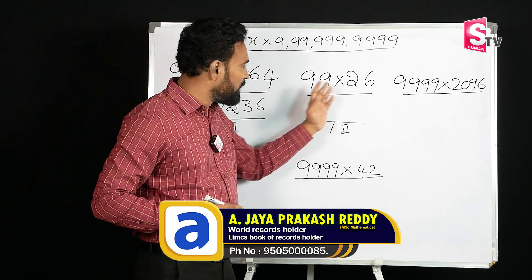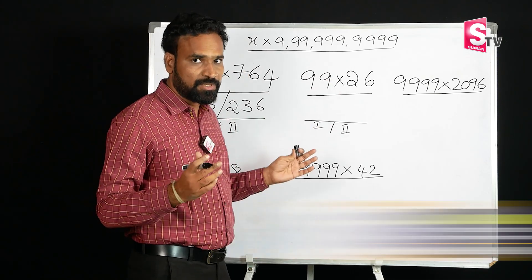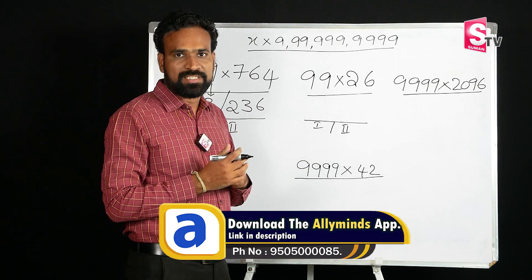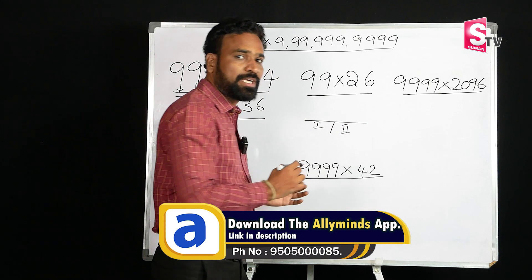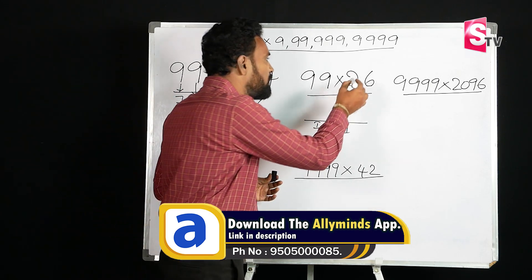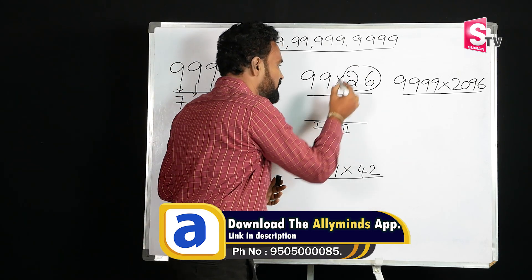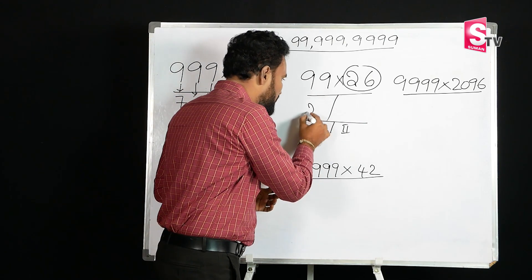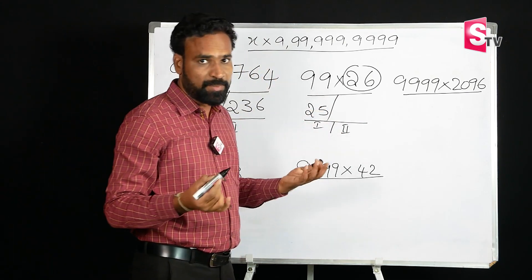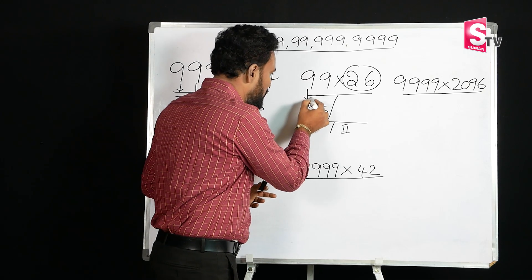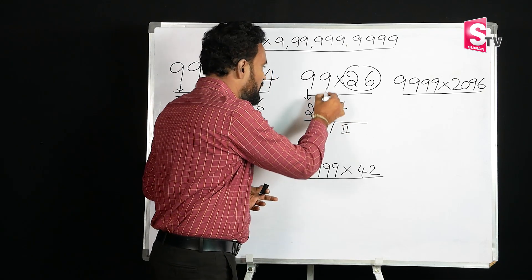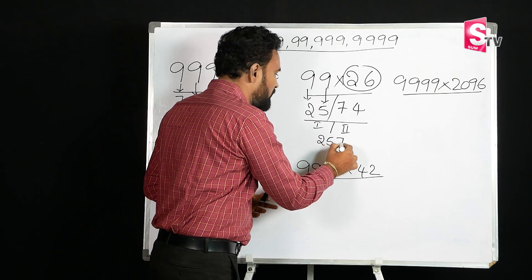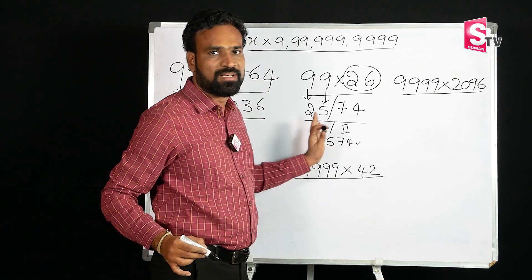Let's see how simple it is. Example: 99 into 26. First part: 1 less than 26 is 25. Second part, subtraction: 9 minus 2 is 7, 9 minus 5 is 4. The final answer is 25 | 74.